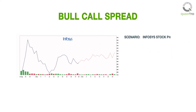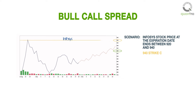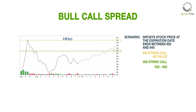What if the Infosys stock price at expiration ends between 920 — the long call strike price — and 940, the short call strike price? In this case, the 940 strike call is out of the money and has no value, and the 920 strike call is in the money and is worth the difference between the Infosys stock price and 920. For example, if Infosys stock price is at 930, then the 920 strike call is worth 10 rupees, and after deducting the net premium paid, the net profit is 5 rupees.